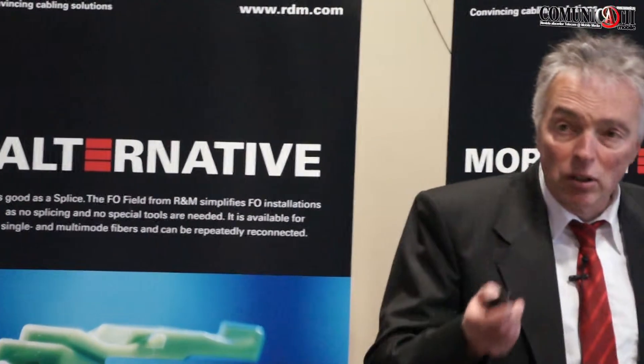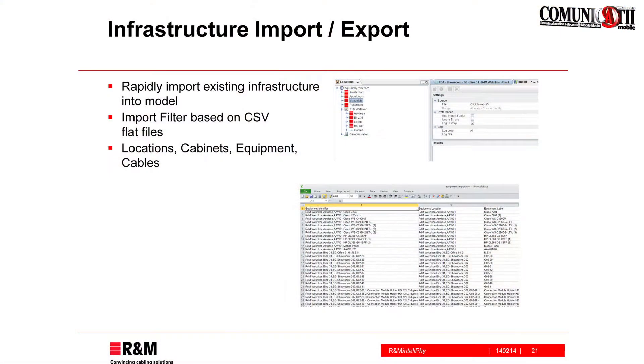If you start from scratch, you do planning in IntelliFi and you have the entire model on the server. More often than not, you will already have existing infrastructure and existing documentation, and you don't want to redraw the entire network in IntelliFi. So we provide the possibility to import Excel tables of cables, of equipment, of racks — imported in one go into the system, and the model is automatically created based on the information in those files.